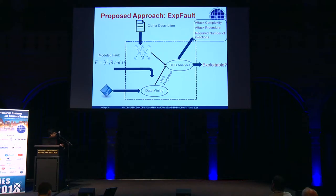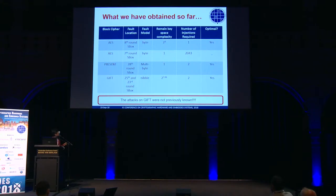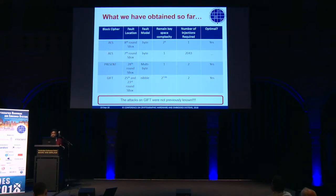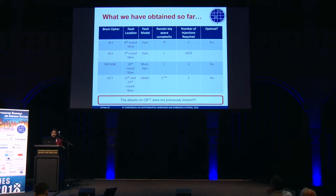So pretty much everything an attacker or evaluator needs to know about a fault attack. A couple of notable results: the eighth round attack on AES S-box due to Professor Tunstall was reproduced with our tool within minutes, with remaining GF complexity to the power of 8 and one required fault injection. A seventh round impossible differential attack was also found by our tool. We found a couple of attacks on PRESENT. The most remarkable one is the GIFT attack — GIFT was proposed last year at CHES, and this year we found optimal attacks on GIFT using our tool within minutes.